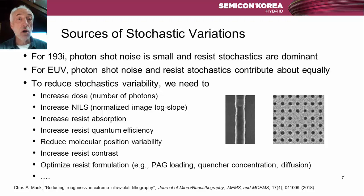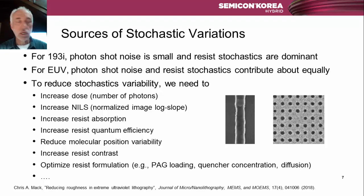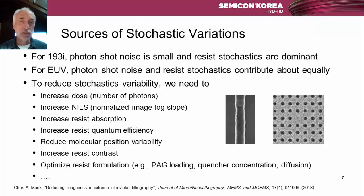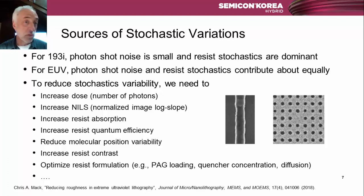This challenge is caused by many things. There are many sources of stochastic variation. In the world of 193 immersion, where we're doing multiple patterning and very sophisticated deposition and etch steps, photon shot noise is relatively small — not insignificant, but much smaller — and resist, etch, and deposition stochastics are dominant. But at EUV, we have an added major source of stochastic variation in photon shot noise. In fact, photon shot noise and all the process stochastics — such as the resist — contribute about equally, making for a much larger source of variation when we use EUV.